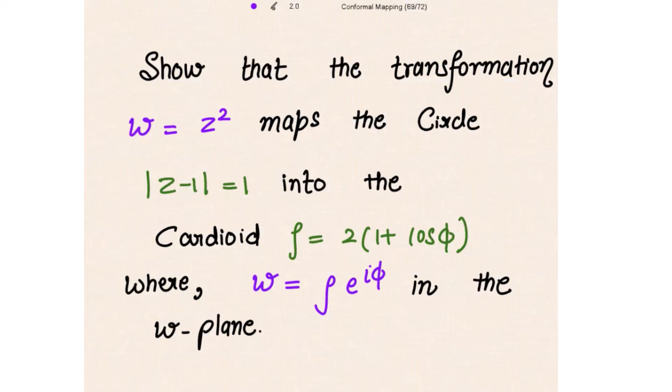We need to show that the transformation w = z² maps the circle |z - 1| = 1 into the cardioid ρ = 2(1 + cosφ), where w = ρe^(iφ) in the w-plane. Using this transformation w = z², we have to show that this circle maps into this cardioid.